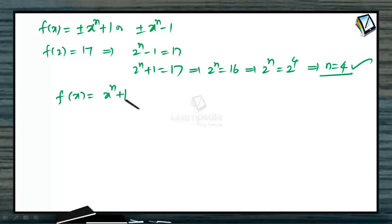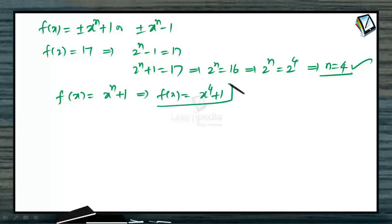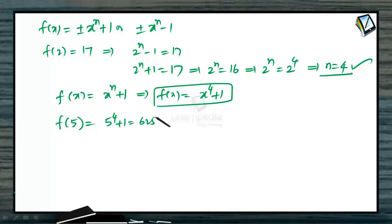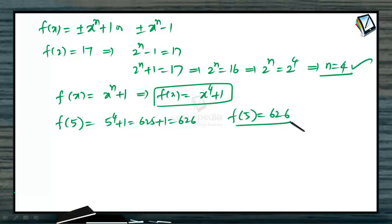Hence the function is f of x equals x to the power of n plus 1, and with n equal to 4, f of x becomes x to the power 4 plus 1. Now finding f of 5: f of 5 equals 5 to the power 4 plus 1. 5 to the power 4 is 625, plus 1 is 626. So f of 5 equals 626.